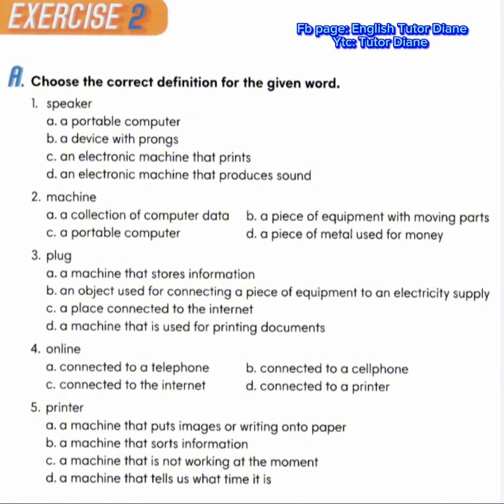Number 3, plug — what is a plug? A, a machine that stores information. B, an object used for connecting a piece of equipment to an electricity supply. C, a place connected to the internet. D, a machine that is used for printing documents. Correct answer is B, an object used for connecting a piece of equipment to an electricity supply. Number 4, online — what is online? A, connected to a telephone. B, connected to a cell phone. C, connected to the internet. D, connected to a printer. Correct answer is C, connected to the internet.